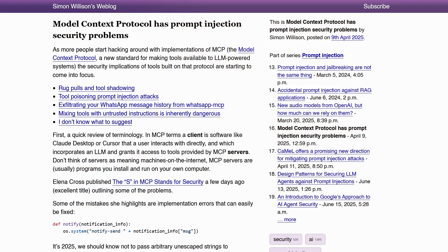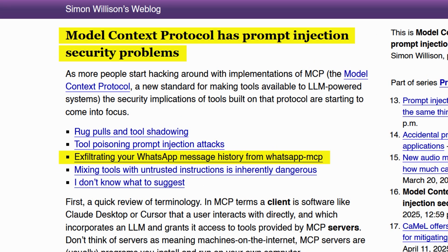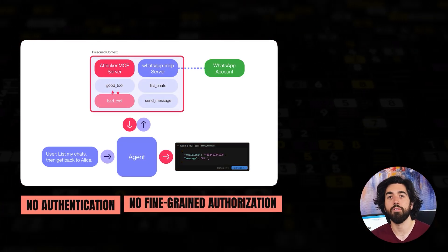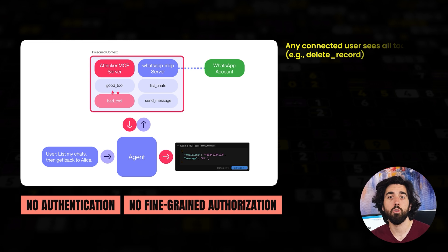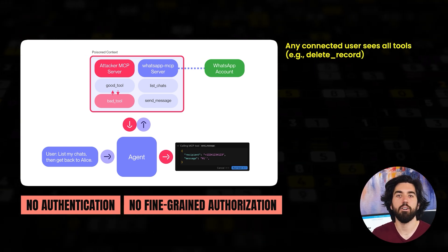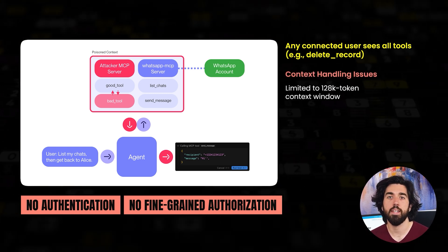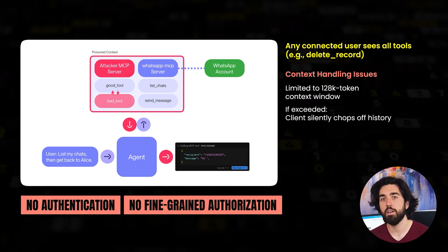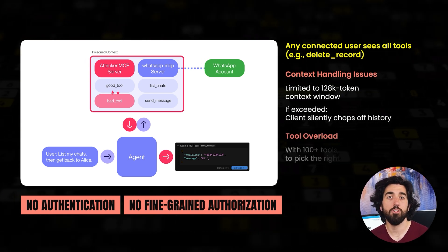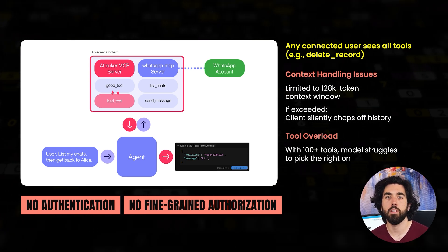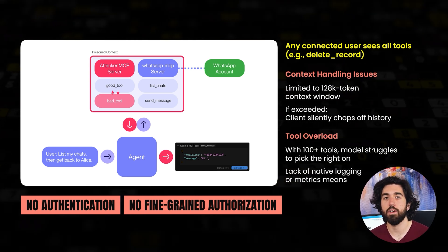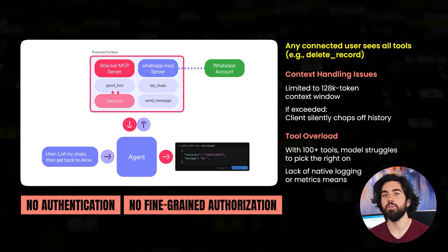Unfortunately, MCP is still in its early days, which come with early headaches. Simon Willison showed how a malicious WhatsApp message could hijack a careless MCP client by smuggling injection instructions into tool descriptions. There's no authentication or fine-grained authorization yet — every user who reaches a server sees every tool, including the nuclear delete-record button. Context handling is also rudimentary: if you hit the 128,000-token ceiling, the client chops off history without you noticing. Load the menu with 100 tools and the model's odds of picking the right one plummet. Because MCP offers no native logging or metrics, you won't notice the misfires unless you add monitoring yourself.